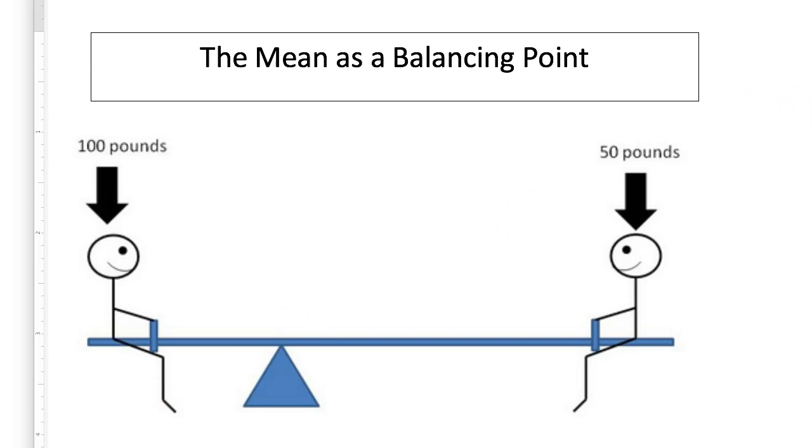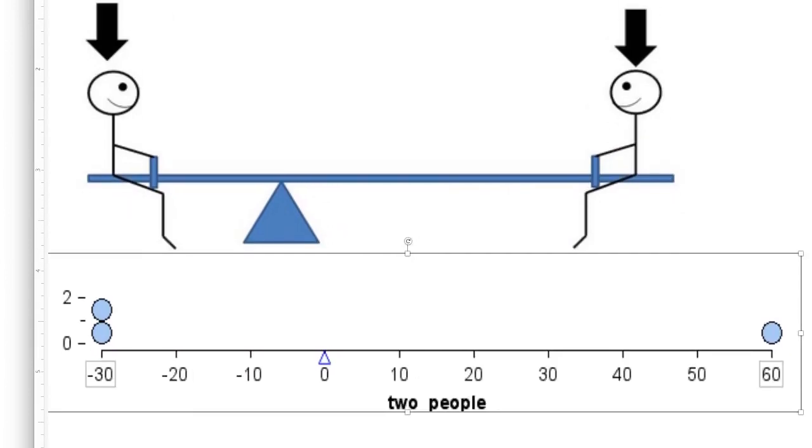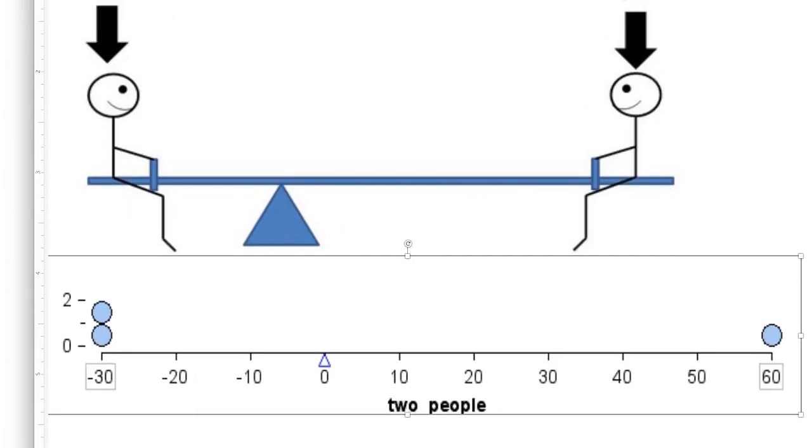Now let's represent this idea using a dot plot. Here, the mean is at zero. We have two data points on the left representing the 100-pound person. The person is sitting 30 units below the mean. We have only one data point on the right representing the 50-pound person. This person is sitting 60 units above the mean. The balancing point for this distribution is at zero, and this is why the mean is zero.